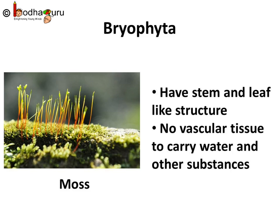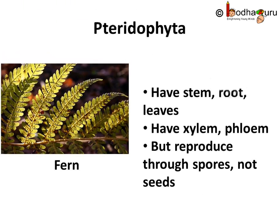Bryophytes are also called the amphibians of the plant kingdom because they need water to complete a part of their life cycle. The next division is Pteridophyta. Plants belonging to Pteridophyta have a body that is differentiated into roots, stem and leaves, and they also have specialized tissue for the conduction of water and other substances from one part of the plant body to another. These plants reproduce through spores, not through seeds. Plants belonging to this division are called Pteridophytes.